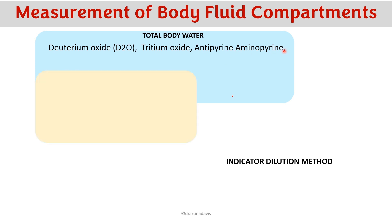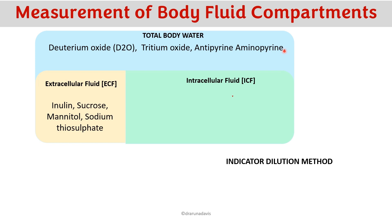To measure extracellular fluid, the indicators used are inulin, sucrose, mannitol, and sodium thiosulfate. Intracellular fluid cannot be measured directly; instead, we find the total body water and subtract the extracellular fluid volume to calculate it.